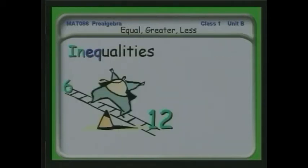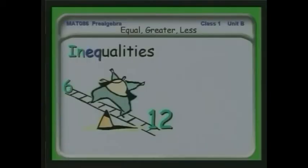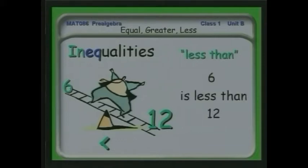We can also talk about inequalities — things that are not equal. There's a man balanced on a pivot point of a ladder, and you see you have six on one side and 12 on the other. We say that this is a condition of less than. That little symbol has the point to the left, the small side to the left, the big side to the right. So we say 6 is less than 12, where the 6 is on the smaller side of the symbol and the 12 is on the bigger side.